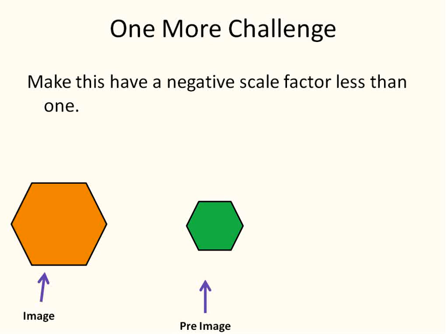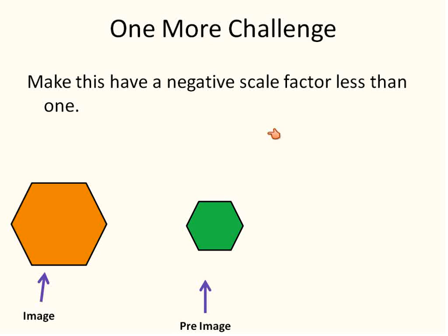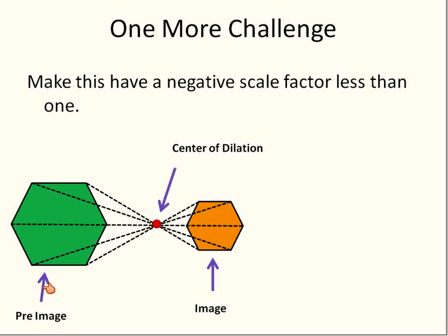The big challenge question: make this have a negative scale factor less than one. To have a scale factor less than one, the pre-image needs to be larger than the image. So we actually have to switch which shape is the pre-image and which is the image. A negative scale factor still has them converging in between, but the trick is: if the scale factor is less than one, the pre-image is larger — it shrinks down to become the new image, making it a fraction.